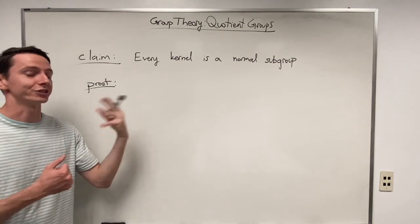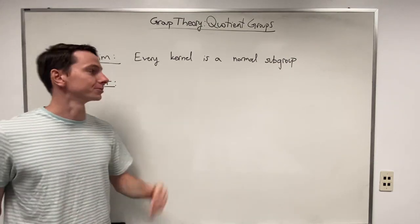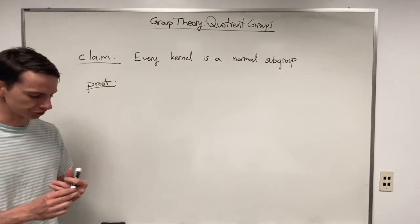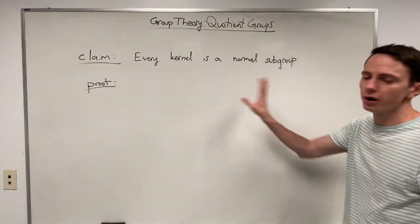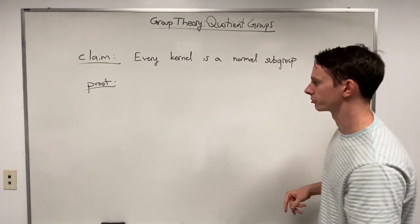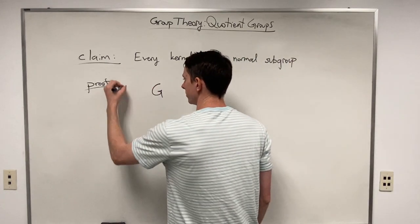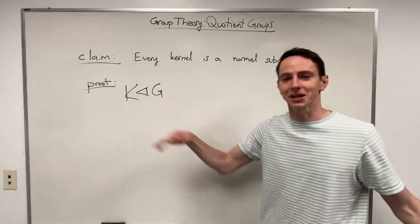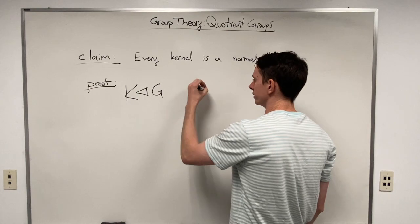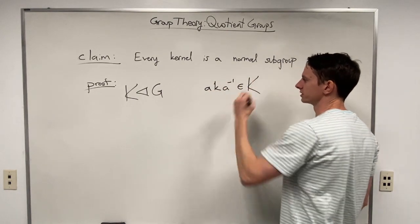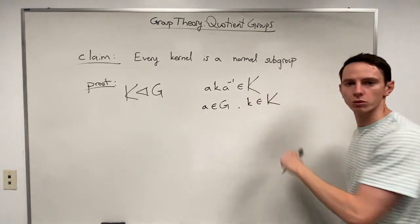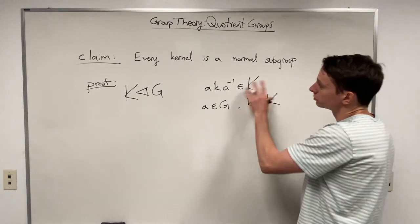The claim is that every kernel is a normal subgroup. Let's remind ourselves what it means to be a normal subgroup. If we have a group G and a subgroup K of G, then K is a normal subgroup of G if the quantity aKa⁻¹ is an element of K, where a is any element of the group and little k is any element of K.